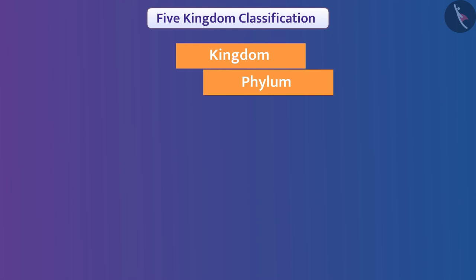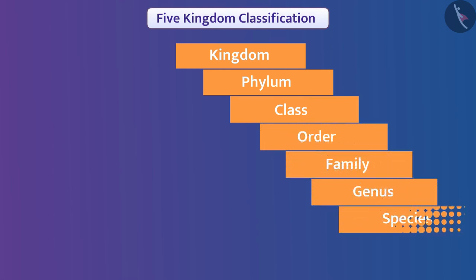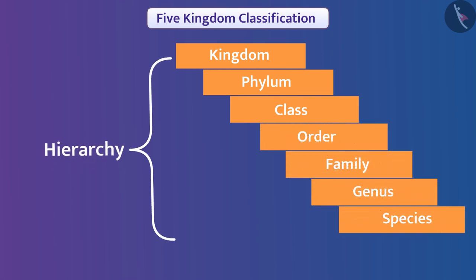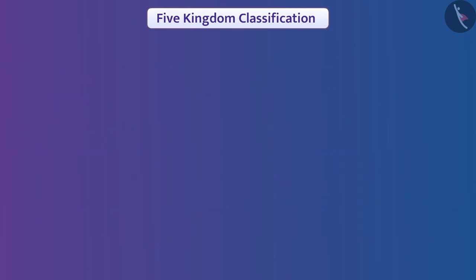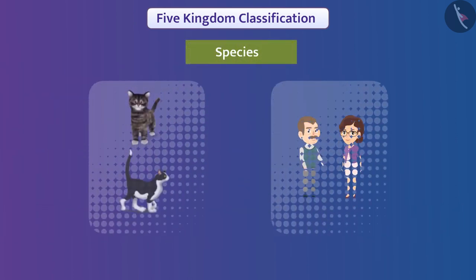On the basis of characteristics, organisms are divided further into smaller groups at different levels, from which a hierarchy is developed. In this hierarchy, kingdoms are at the upper level, and at the lower levels respectively there are phylum, class, order, family, genus, and species.